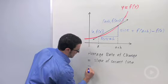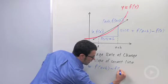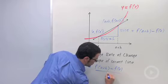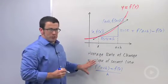That's why the slope of the secant line is f of a plus h minus f of a over h. This is the average rate of change of the function.